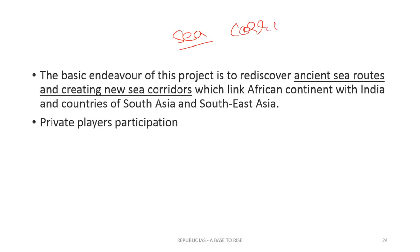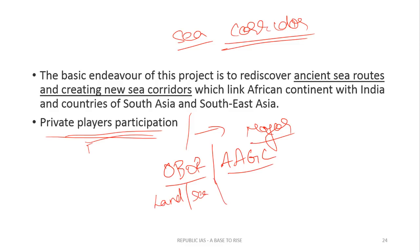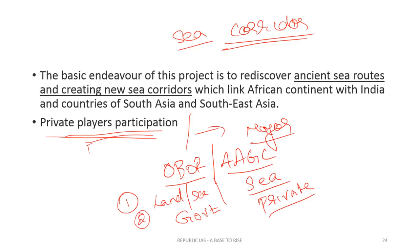An important point about the Asia Africa Growth Corridor is that private players will participate, playing a major role in the project. Connectivity will be established through maritime routes — ancient and new sea routes — connecting Asia with Africa, involving not only India and Japan but also Southeast Asian nations and Oceania. Comparing with One Belt One Road: OBOR has both land and sea connectivity, while Asia Africa Growth Corridor has only sea connectivity. Also, OBOR is a government-funded model, while AAGC involves private sectors.